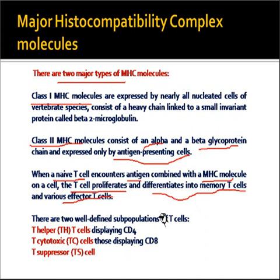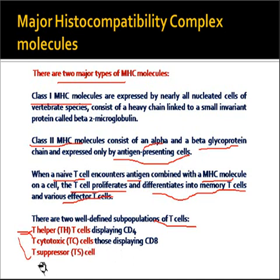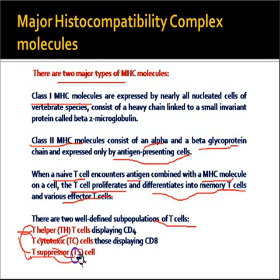T cells were previously classified into three types — T helper cells, T cytotoxic cells, and T suppressor cells — but recently T suppressor cells have been included under the category of T helper cells. So now they are primarily said to be of two types: T helper cells, which display CD4+ receptors, and T cytotoxic cells, which display CD8+ receptors on their surface.